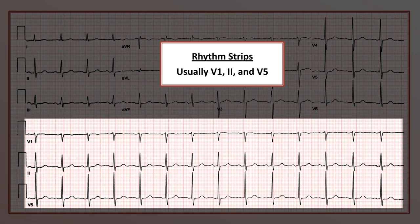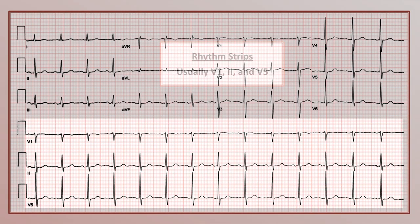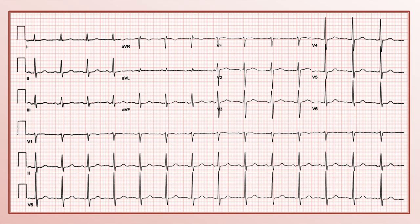I don't know this for a fact, but I would guess that V5 is included, as it comes close to having an orthogonal direction to the other two, as we'll soon see. I won't talk any more about the rhythm strips today, but they will come up from time to time in future EKG lectures.